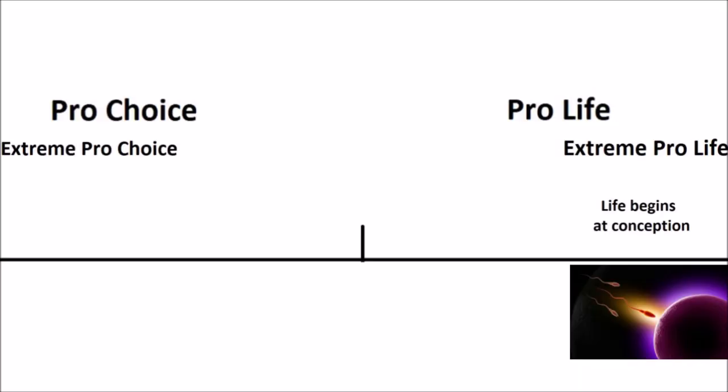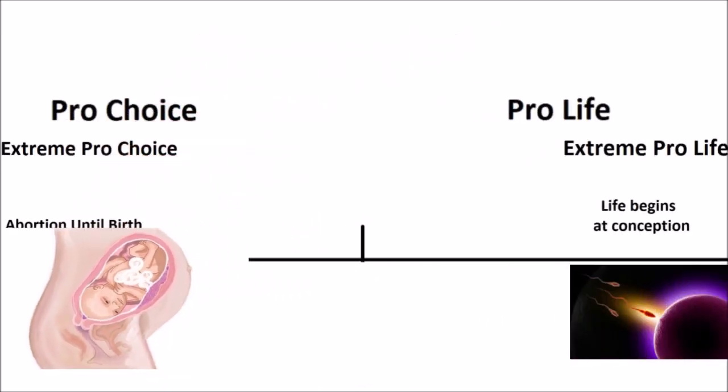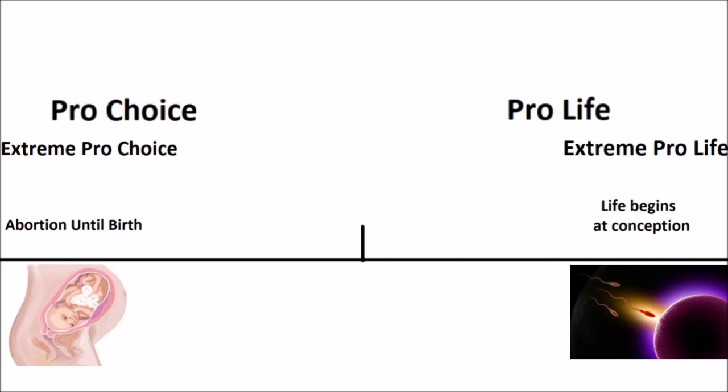On the extreme pro-choice side, you would argue that the fetus is not a living person, right up until birth, until it is a physical separate entity to the mother. As long as it is inside the mother, only the mother should be given any moral weight, as the fetus is very much her body. And so an abortion should be permissible right up until birth, until the moment the baby is fully out of the mother.